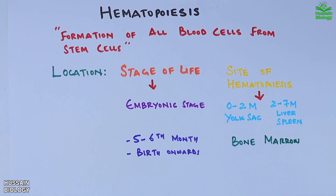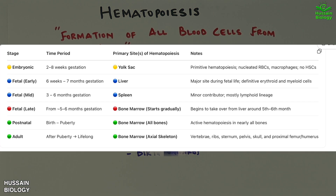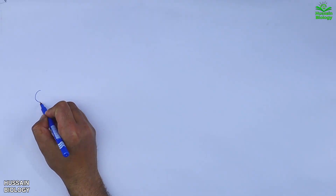As the fetus develops further, around five to six months, hematopoiesis starts to shift towards the bone marrow, which becomes the main site after birth and continues throughout life. From birth onwards, the bone marrow remains the permanent and exclusive site of blood cell formation. Here is the chart showing all this information.